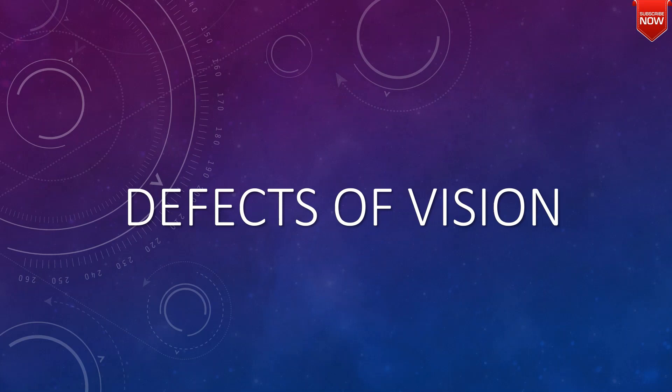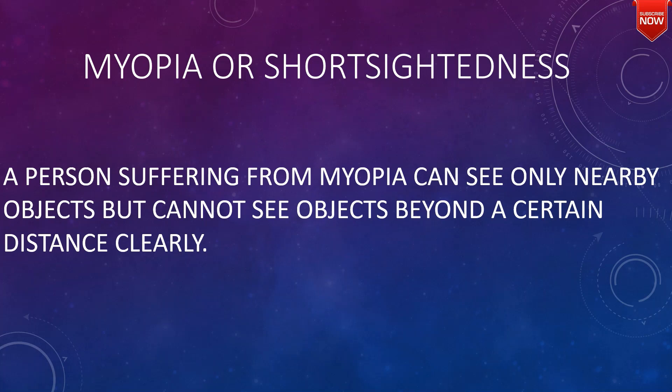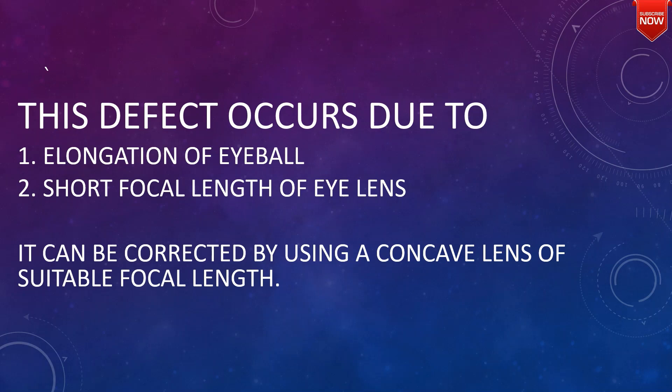Welcome to our channel. Today we are discussing defects of vision. The first defect is myopia, or short-sightedness. A person suffering from myopia can see only nearby objects but cannot see objects beyond a certain distance clearly. This defect occurs due to elongation of the eyeball and short focal length of the eye lens.